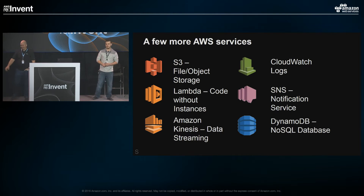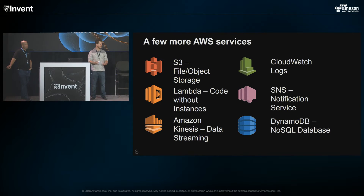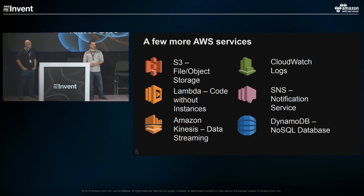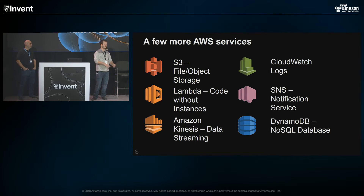A quick review of AWS services that come into play with our collection: S3 is file and object storage. Lambda lets you run functions and scripts as code without instances — they spin up a temporary container, execute your script, and tear it back down. Most of our Lambda work is in Python. Amazon Kinesis is used for scaled data streaming. CloudWatch Logs aggregates logs from instances and a few other services. SNS notification service lets you send a message to an endpoint which is then replicated to any subscribed services. DynamoDB is a NoSQL database — we largely use that as a configuration store.